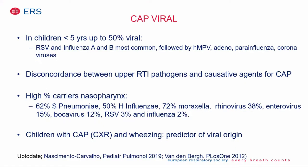The most common viral causes are RSV and influenza A and B, followed by metapneumovirus, adenovirus, and the parainfluenza viruses. There is a discordance between what you can find in the upper respiratory tract and the causative agents in CAP. In a recent study looking at carriage of viruses and bacteria in the nasopharynx of healthy children, strep pneumoniae was identified in 62%, haemophilus in 50%, and moraxella was very common. Rhinoviruses are common in healthy children, although RSV and influenza are not very common in asymptomatic children. If a child with radiologically confirmed CAP is wheezing, this is a very strong predictor that the origin is viral.